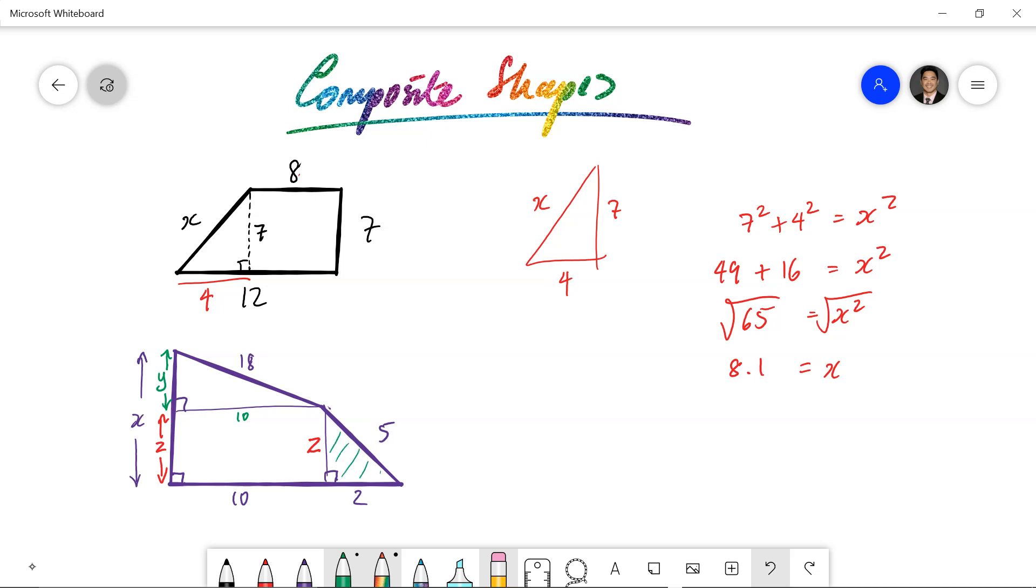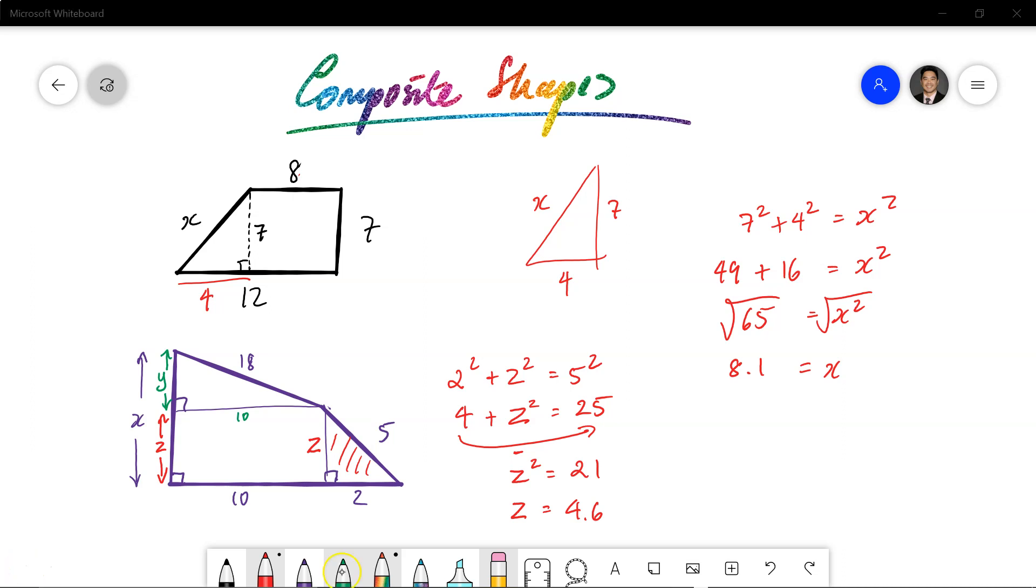So let's start off with this triangle here. Okay, we've got, I'll do this in red. So we'll work out this triangle. We've got 2 squared plus z squared is equal to 5 squared. And sorry that my 2's and z's look the same. There we go. So 4 plus z squared is equal to 25. I'm going to move the 4 across by subtracting. So z squared is equal to 21. And then lastly, we want the square root of 21. z is equal to 4.6.